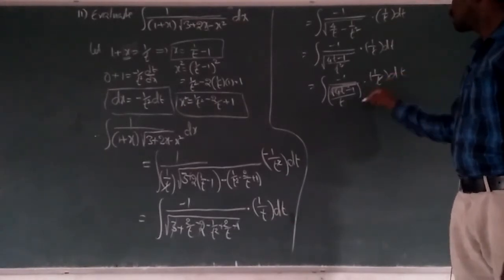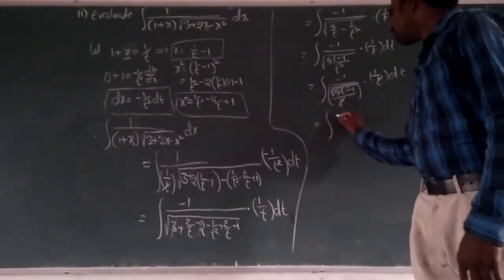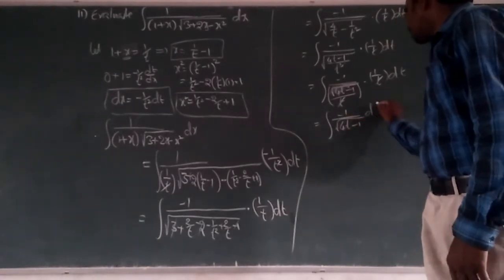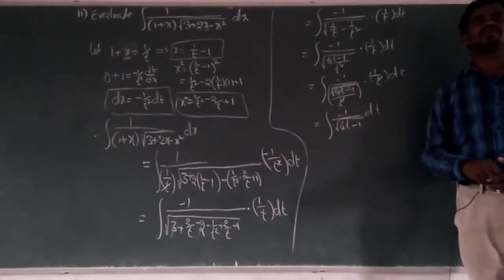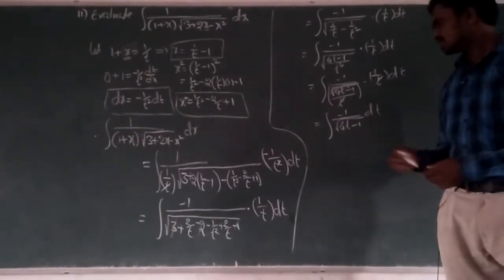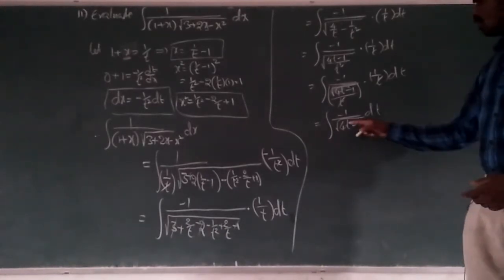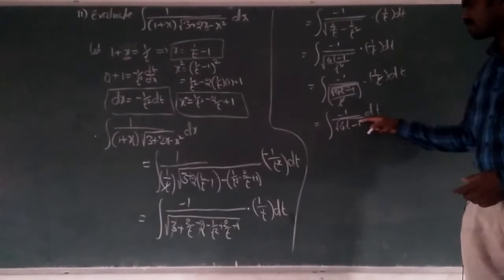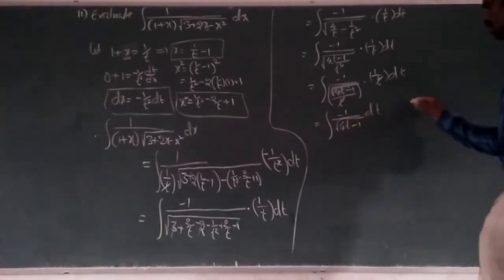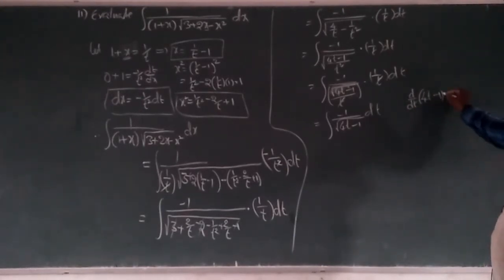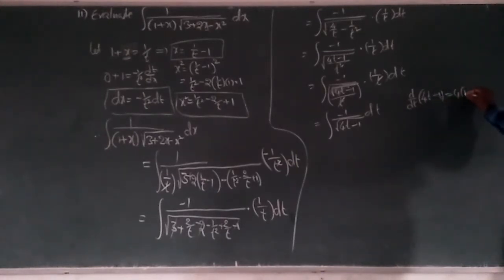So we just have −1 × 1/√(4t − 1) dt. What is the derivation of 4t − 1 with respect to t? 4 is constant, derivation of t is 1, derivation of 1 is 0, so just 4. If the denominator is a function and the numerator is its derivative, we can apply the formula: ∫ f′(x)/√f(x) dx = 2√f(x).